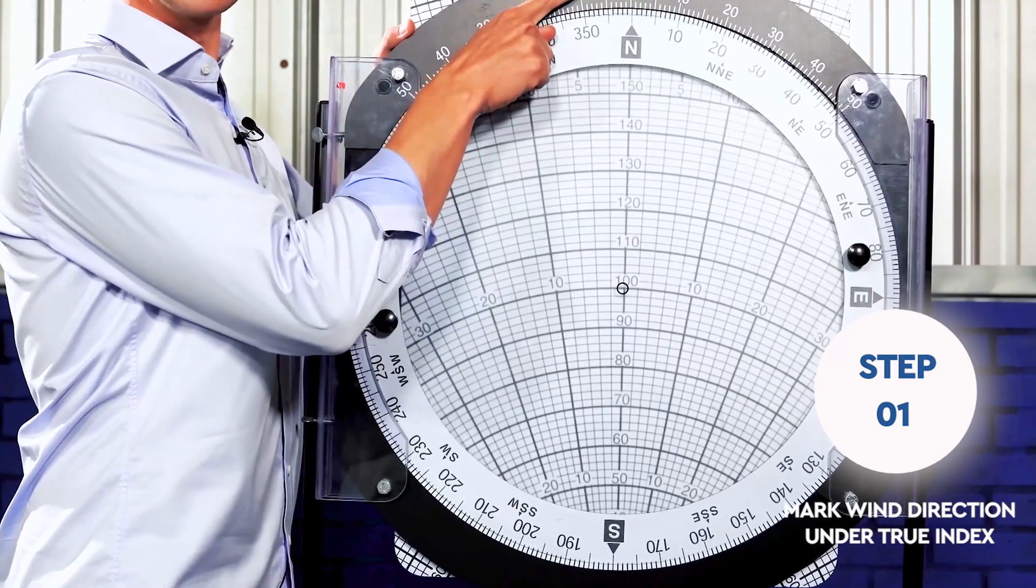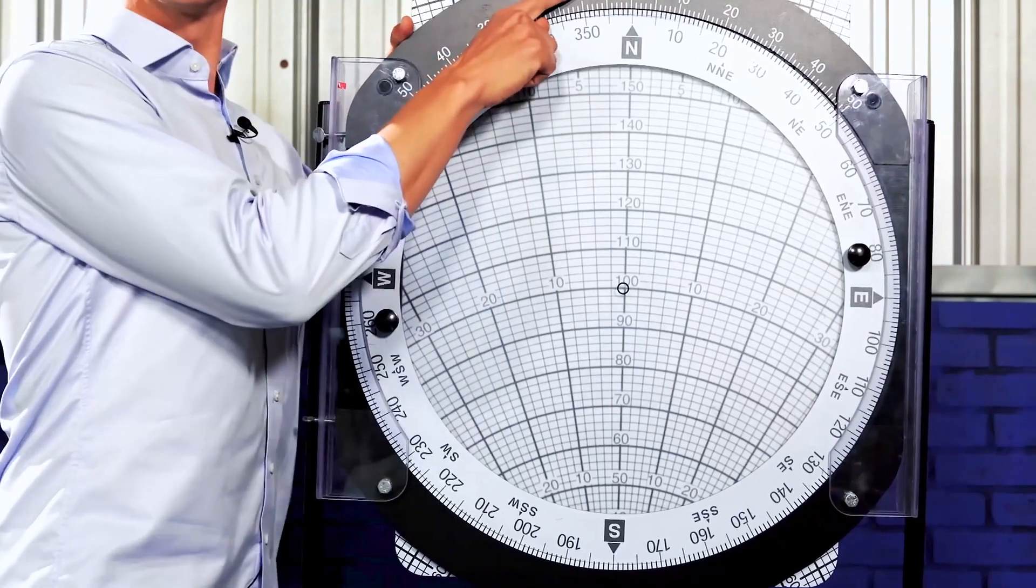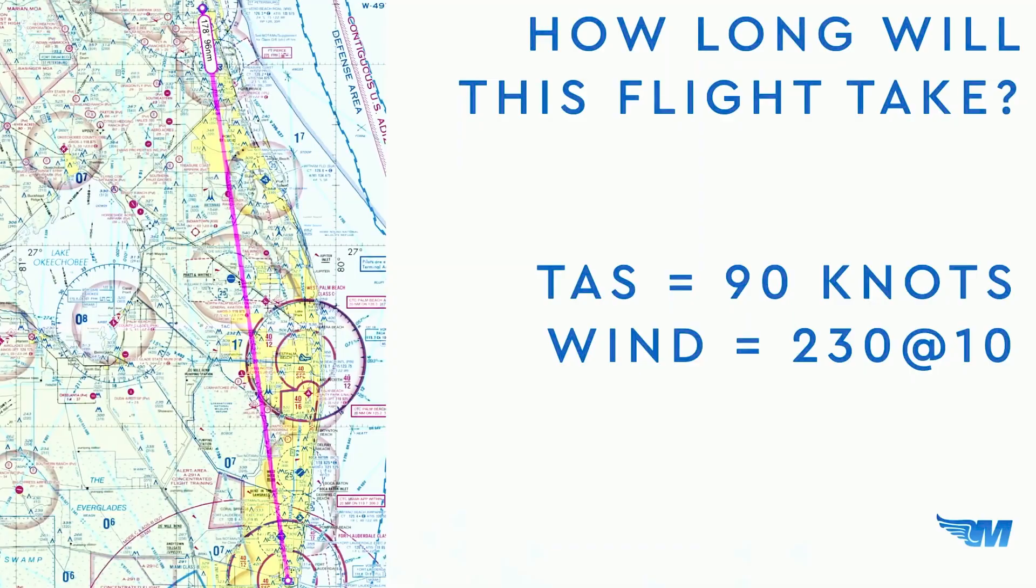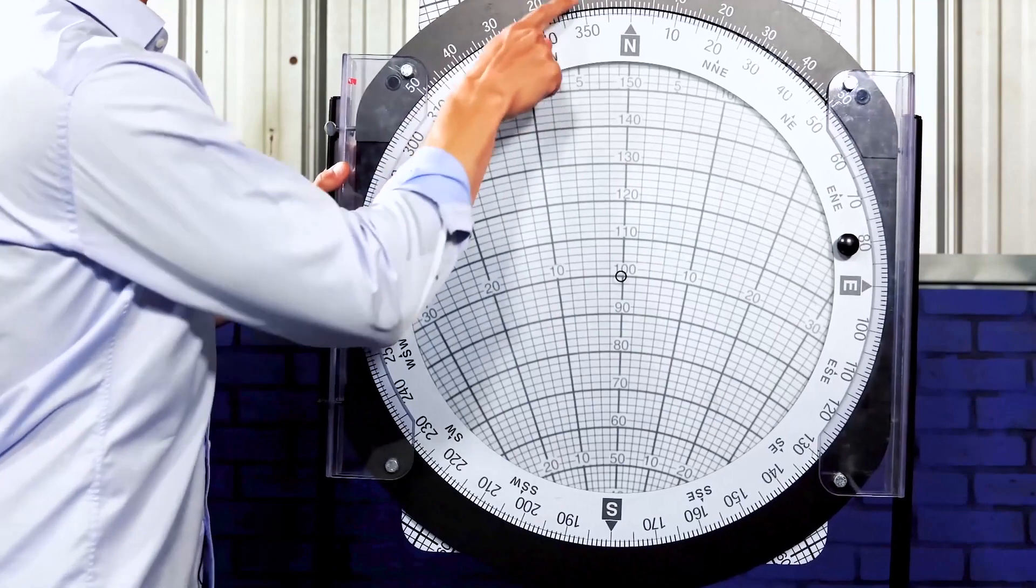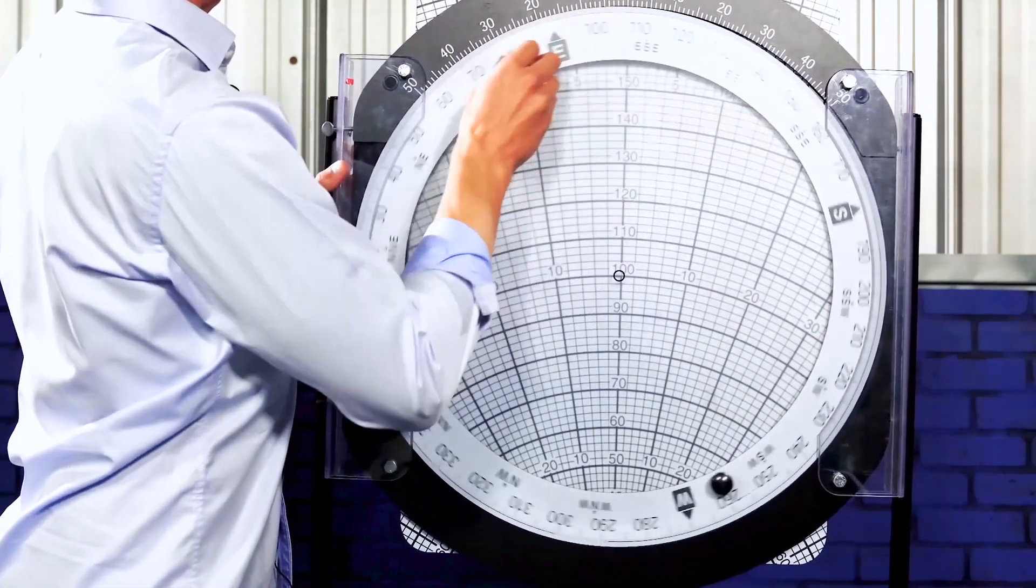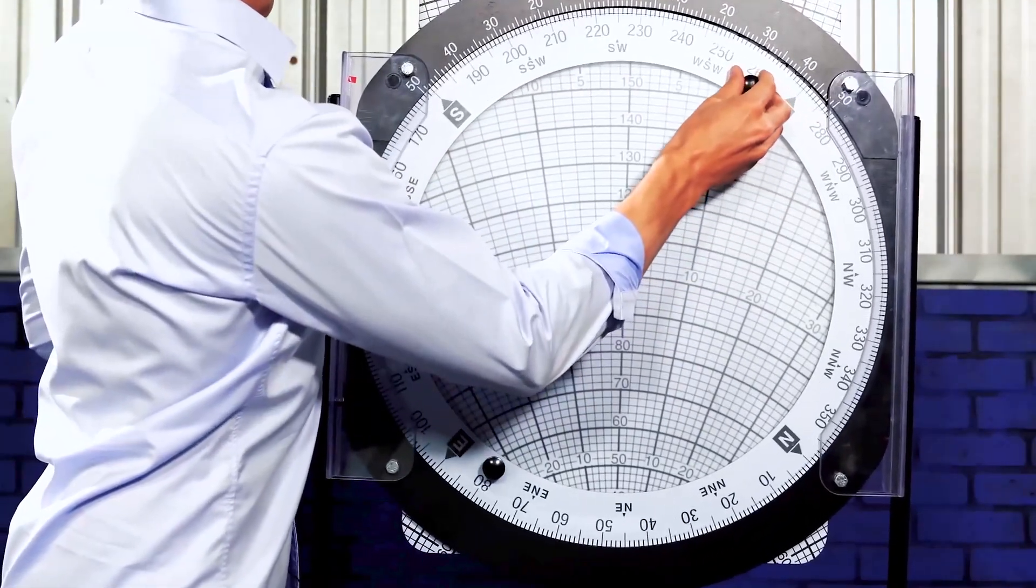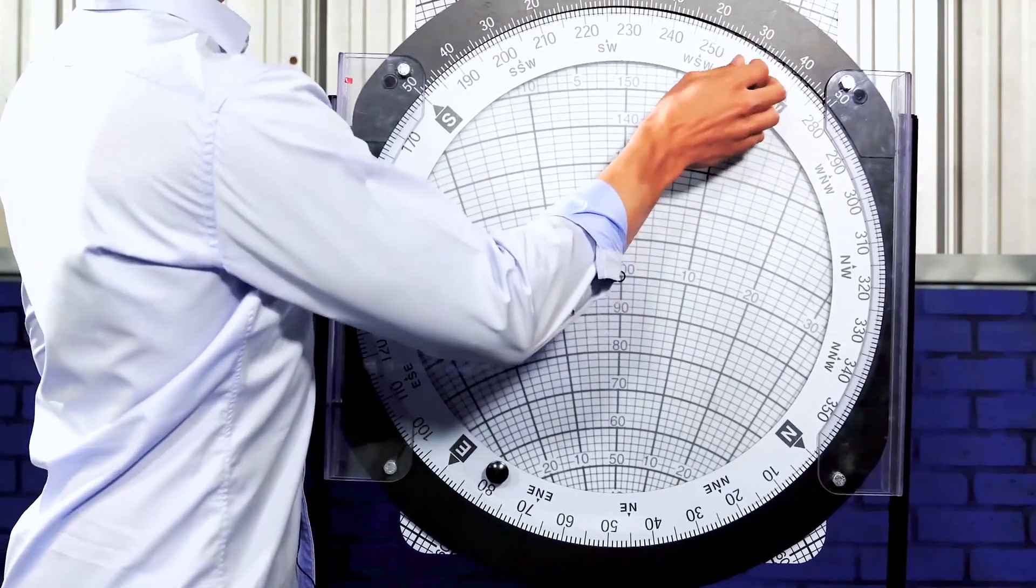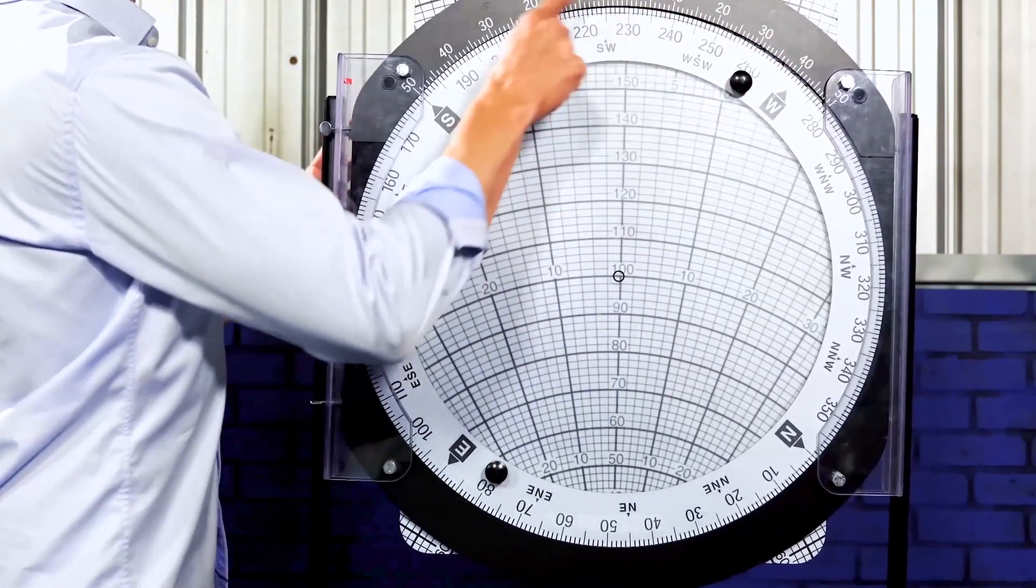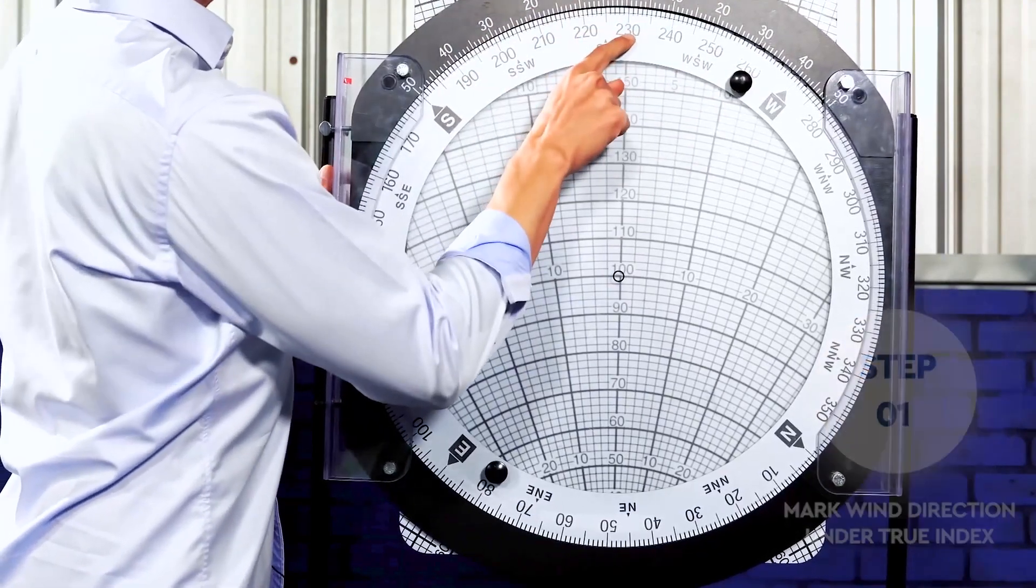Our true index is right here at the top of your screen. It says to mark wind direction. What was our wind direction again? Let's look at it here together. Our wind direction, oh, there it is. Our wind was 230 at 10. So back to the wind side, I'm going to mark my wind direction under my true index. So I'm going to come all the way around.